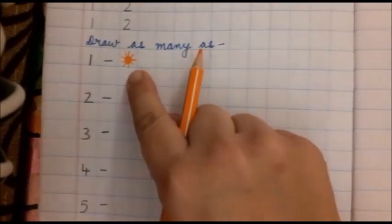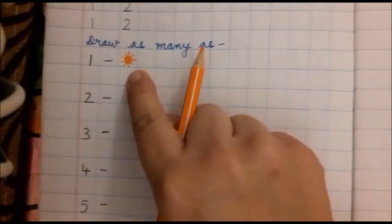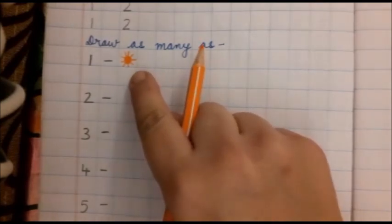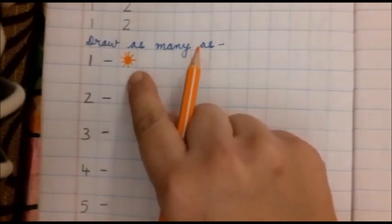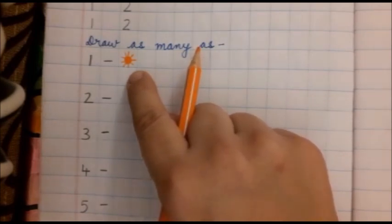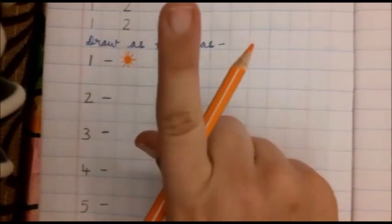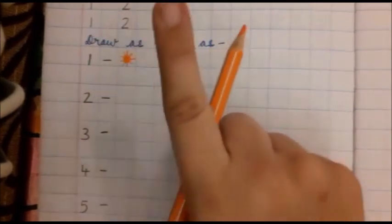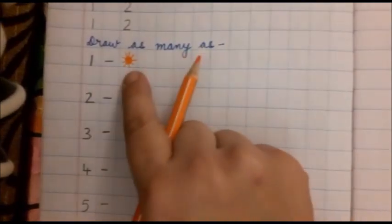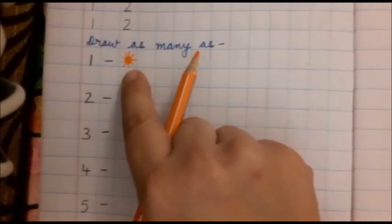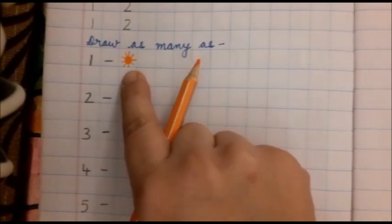Anubha ma'am has made the sun. I have made the sun. When you look up in the sky, bache, how many suns do you see? Kitne sun dikhai deite hai? Only one. Because there is only one sun. So, for number 1, I have drawn the sun.